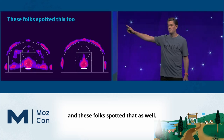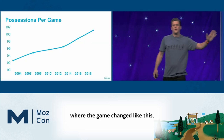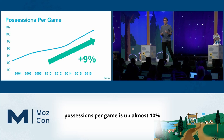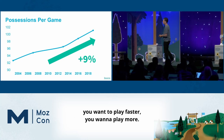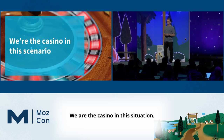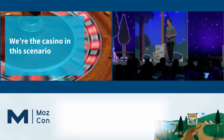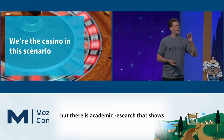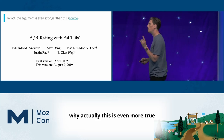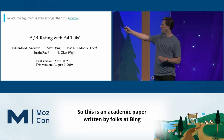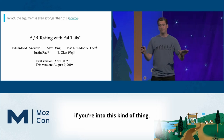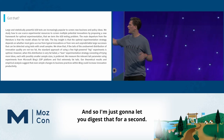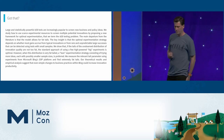These folks spotted that too. Over the same time period where the game changed, the cadence of the game changed as well. In the last 20 years, possessions per game is up almost 10%, because if you have the edge, you want to play faster, you want to play more. We are the casino in this situation — we have the edge, so we want to go faster, we want to test more things. There is academic research showing why this is even more true for web testing. This is an academic paper written by folks at Bing — reasonably accessible, definitely worth a read.